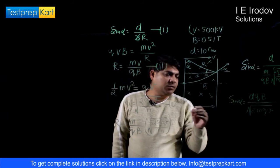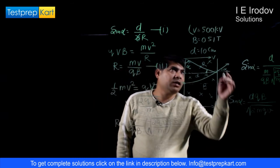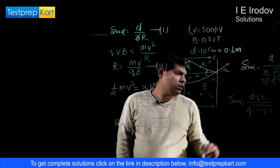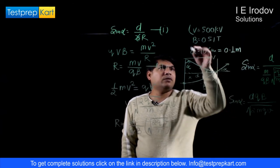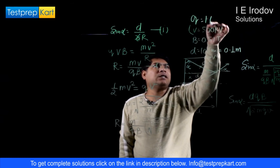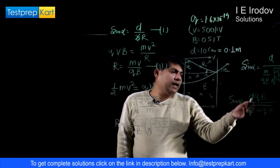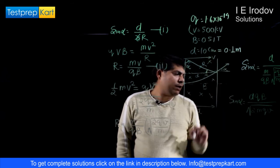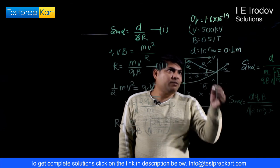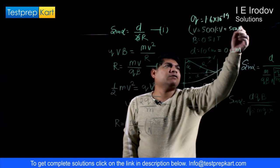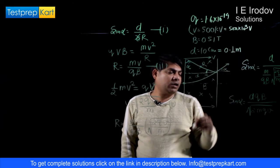We have D. D is the distance between these two, so D can be replaced as 0.1 meter. Q, charge of a proton, that is 1.6 times 10 to the power minus 19. And magnetic field B is 0.51 T. And the potential is 500 kV, so it can be written as 500 times 10 to the power 3.